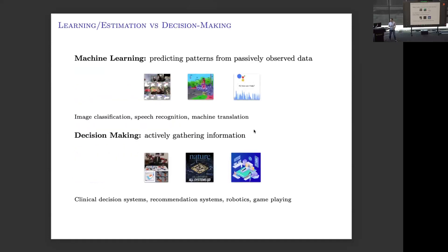Let me start with a very quick motivation. In machine learning, we are very good at predicting patterns — we collect huge amounts of data and feed our models this passively collected data. There are lots of successes in image classification, recognition, translation, and so forth. Then there is another type of decision-making flavor of machine learning, which is to actively gather information or make decisions that result in information being conveyed to you. Examples of this include clinical decision systems, recommendation systems, robotics, and game playing.